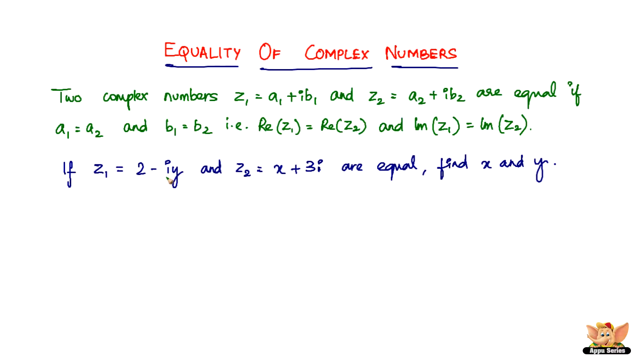The example reads: If z₁ = 2 - iy and z₂ = x + 3i are equal, then find x and y. We know that they have clearly given that z₁ is equal to z₂.